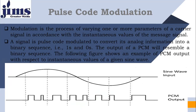In the modulation process, we have a signal which we call a carrier signal. A signal has three parameters: amplitude, frequency, and phase. We have to change any one of these parameters at a time, while the remaining two are unchanged — with respect to the amplitude of the message signal.